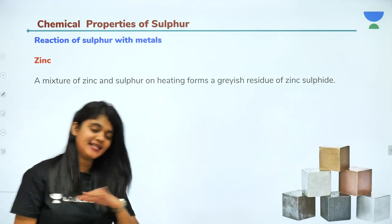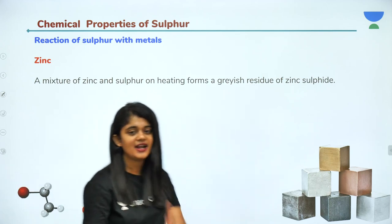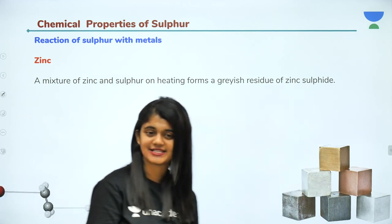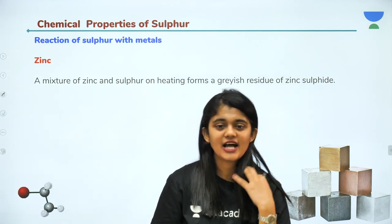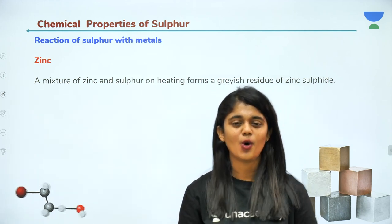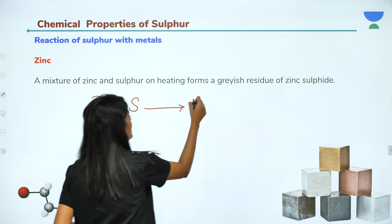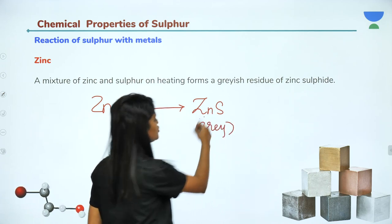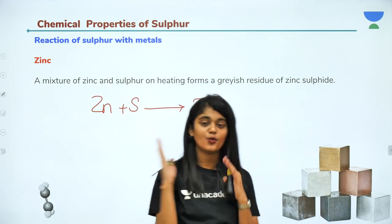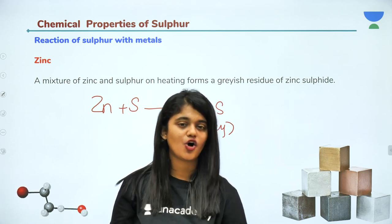We have now seen reactions of sulfur with non-metals — hydrogen, oxygen, chlorine, phosphorus, and carbon. Next is the reaction of sulfur with metals. The first metal is zinc. When zinc is heated with sulfur, you get a grayish residue of zinc sulfide (ZnS).